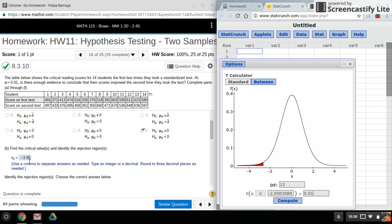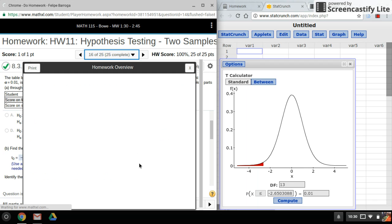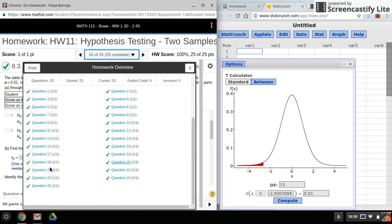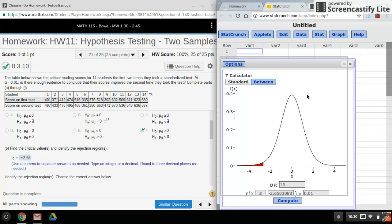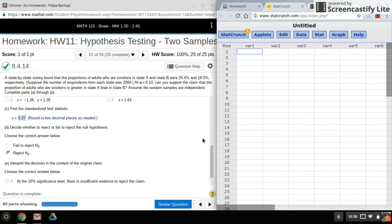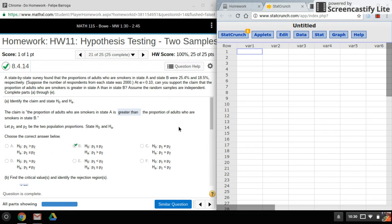The other one I wanted to go over was the proportions, how to get the critical value for proportions. So here's the example here.